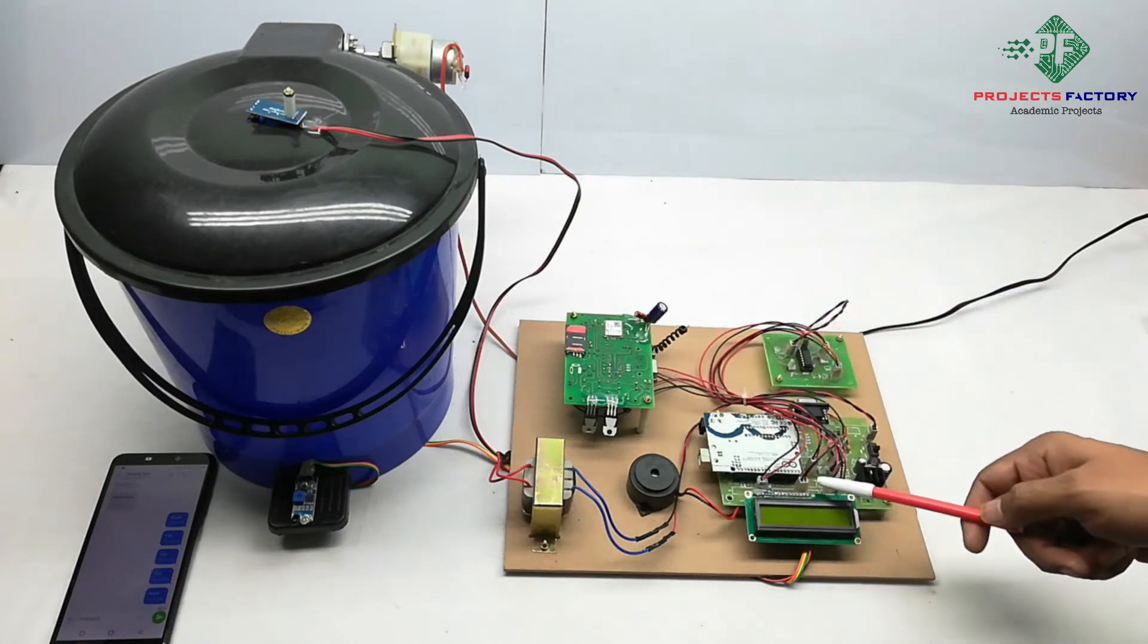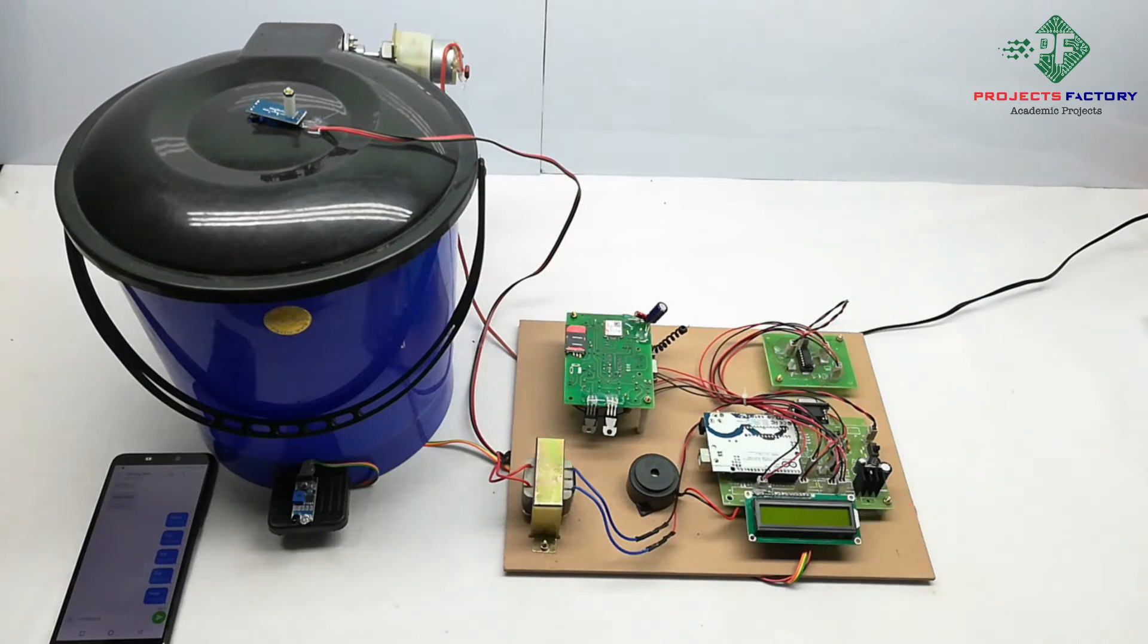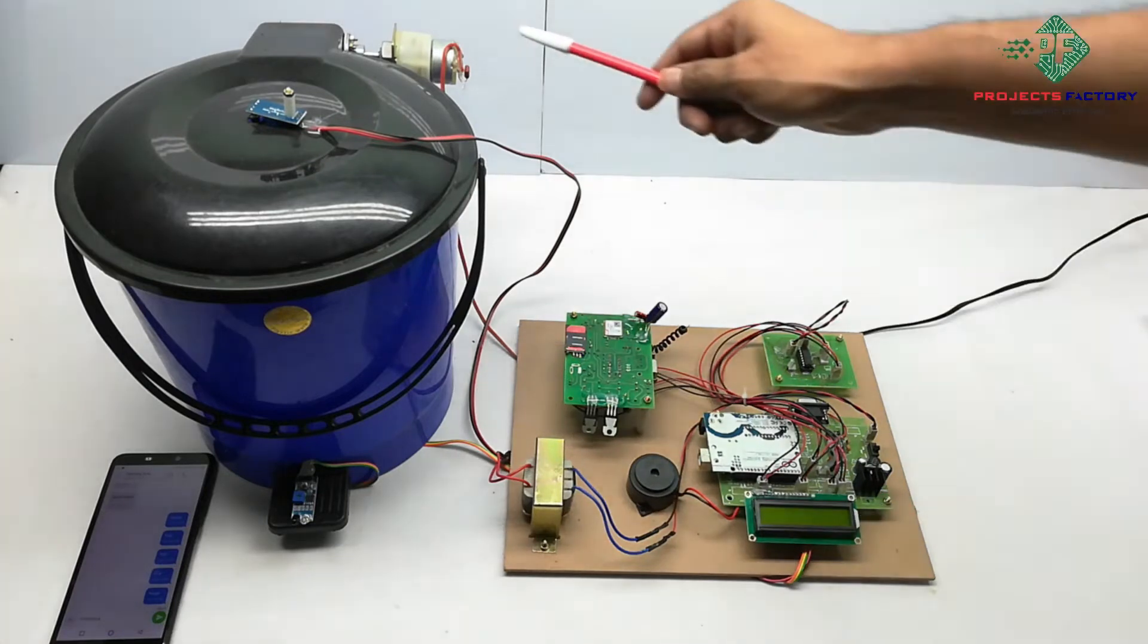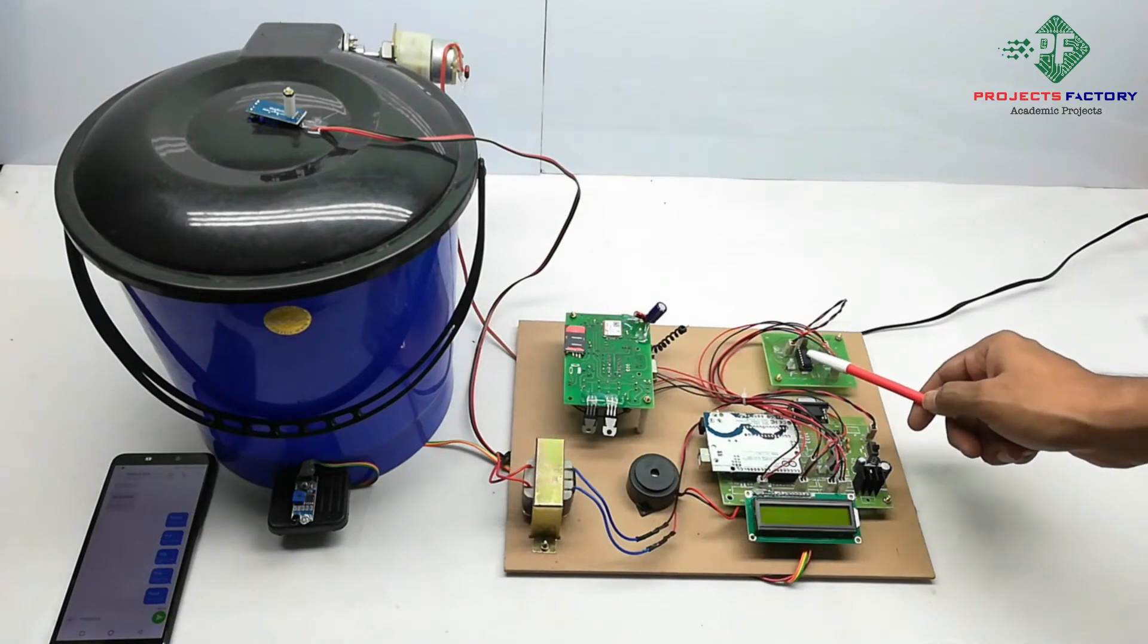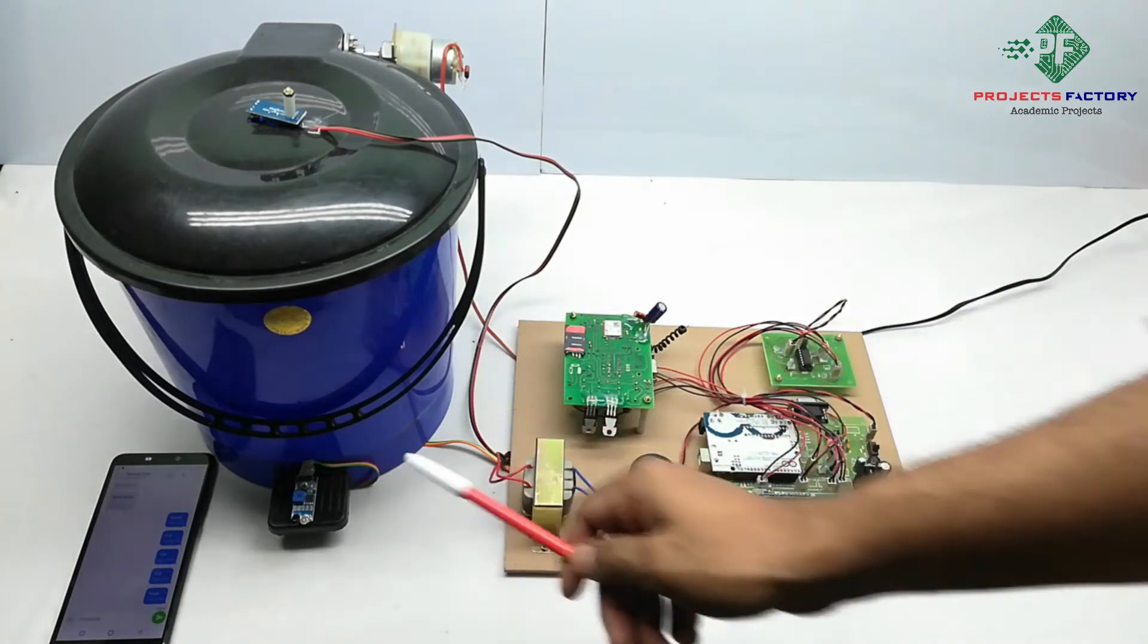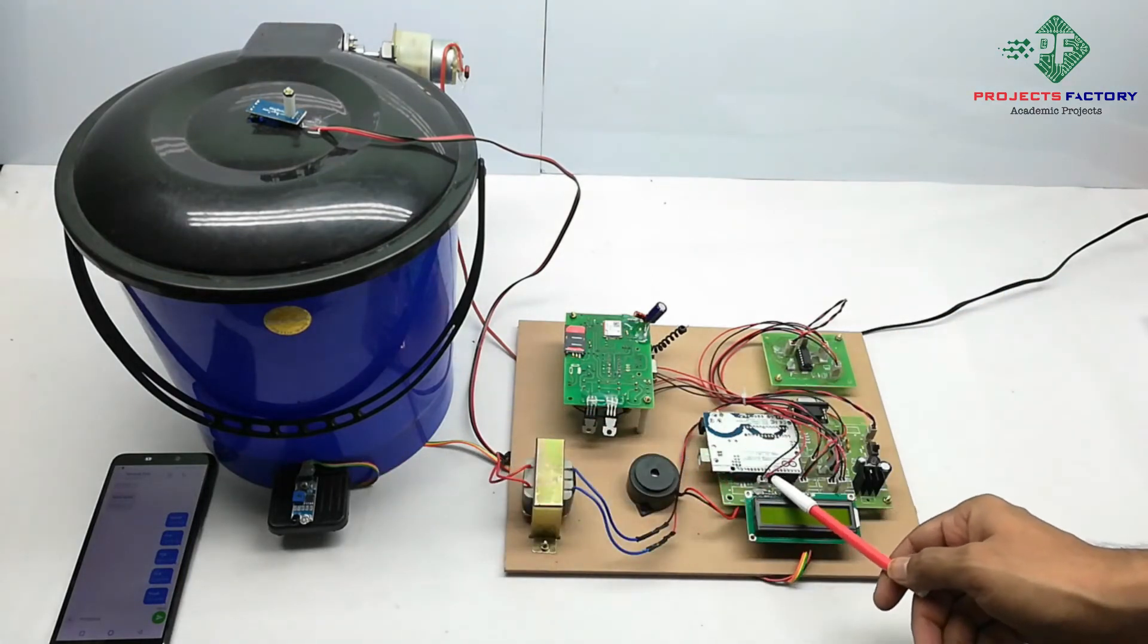GSM modem connected to Arduino through UART. Here DC motor controlled by L298H bridge IC which is connected to Arduino digital pins. Two IR sensors and buzzer connected to Arduino digital pins respectively.